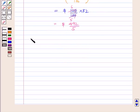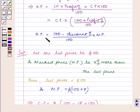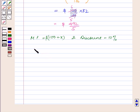Now as mark price is equal to $(100 + X) and discount is equal to 10%, as we know selling price is equal to (100 minus discount percent) upon 100 into mark price. This implies selling price is equal to (100 minus 10) upon 100 into (100 plus X), which is 90 upon 100 into (100 plus X).